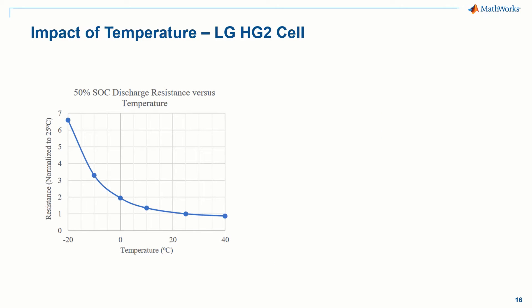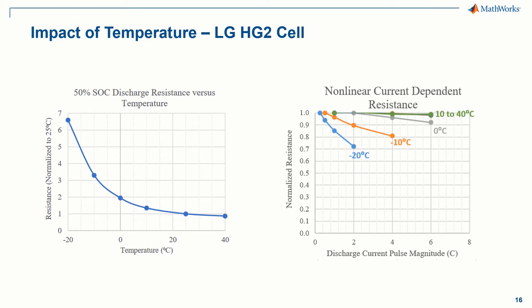The LG HG2 battery considered in this study at negative 10 degrees C has resistance more than 3 times greater than at room temperature, as shown in the figure on the left, and it is more than 6 times greater at negative 20 degrees Celsius. The resistance also becomes a nonlinear function of current at low temperatures, as shown in the figure on the right, with resistance for a 2C current pulse at negative 20 degrees C being about 30% less than the 0.25C current pulse. This nonlinear resistance is commonly referred to as the Butler-Volmer equation resistance, and is known to be more prevalent at low temperatures.